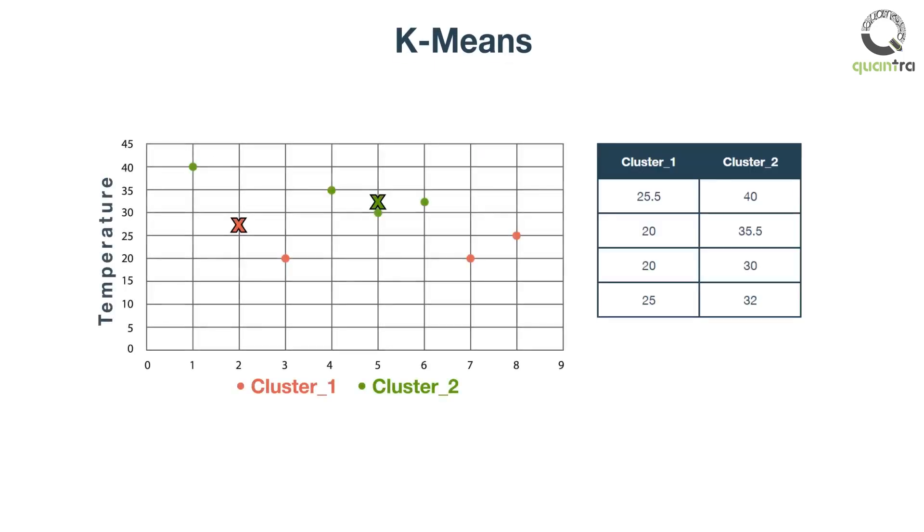Now we see that we are left with four data points in the cluster_1 cluster and four data points in the cluster_2 cluster. After the two clusters are formed, we take the average of the data points in both the clusters separately and assign these values to be the new centers for the two clusters.